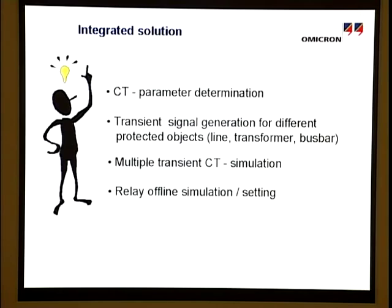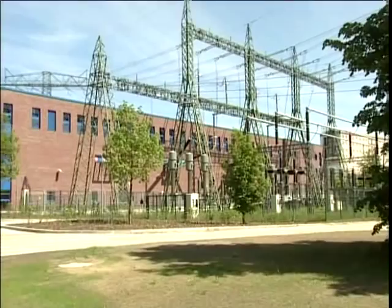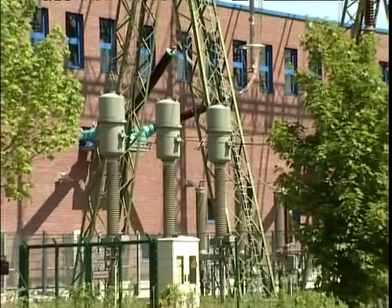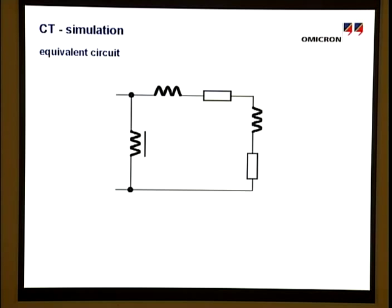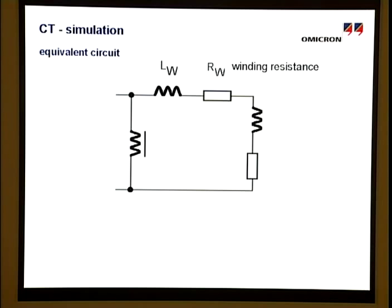In order to form a basis for further discussions, we will first consider the conventional CT in more detail. For the mathematical description of CTs with iron core, the model shown here is normally used. It consists of the leakage inductance, the winding resistance, the connected burden, and the CT inductance.